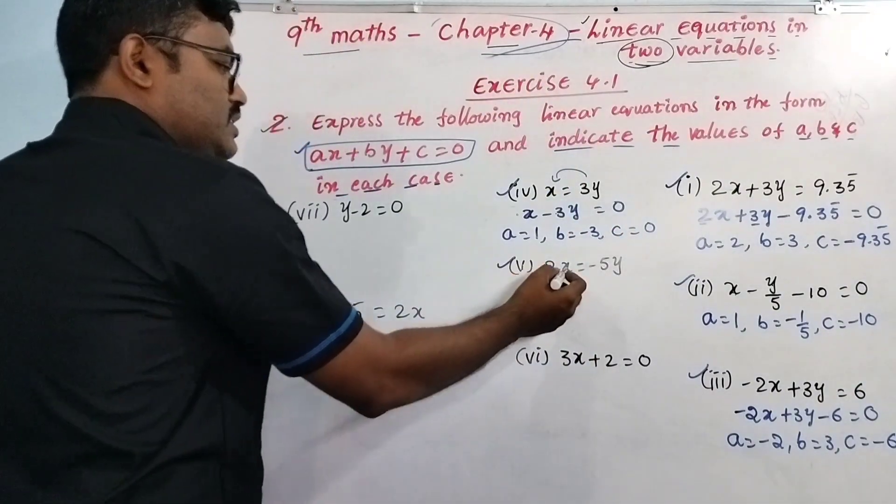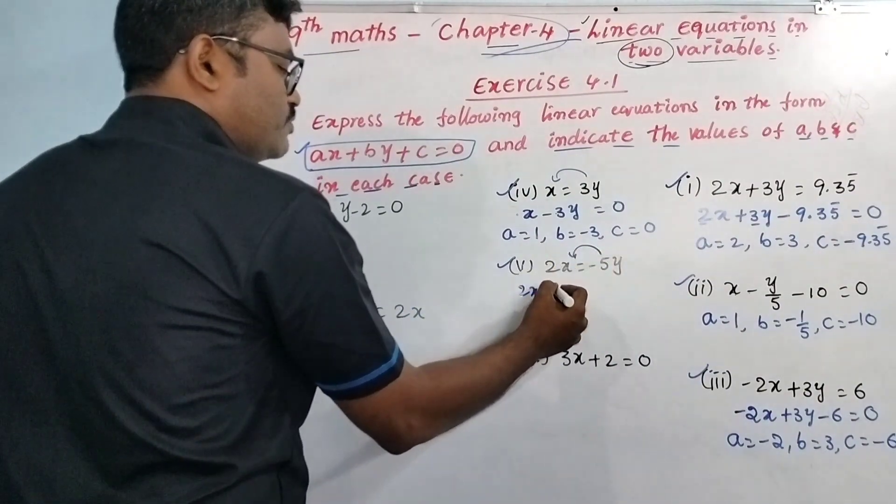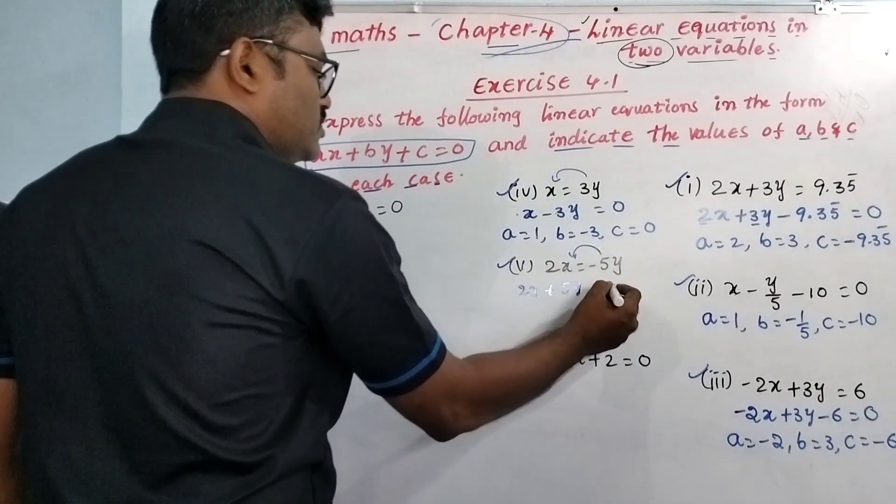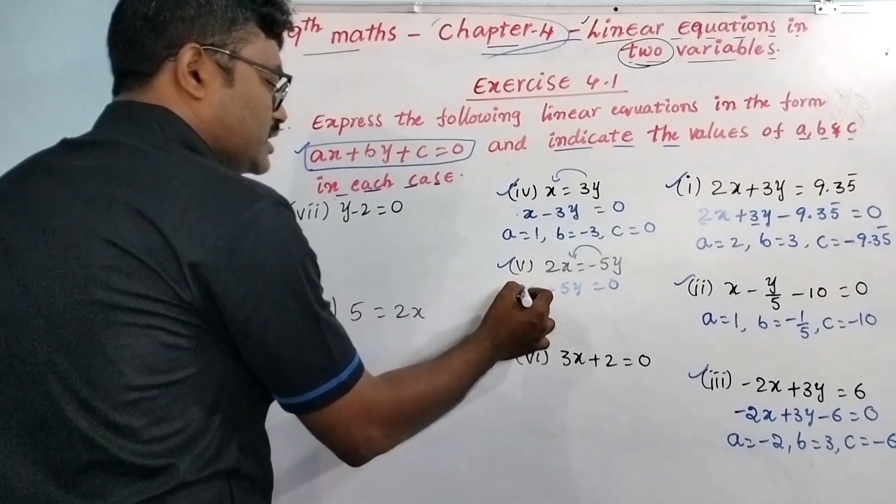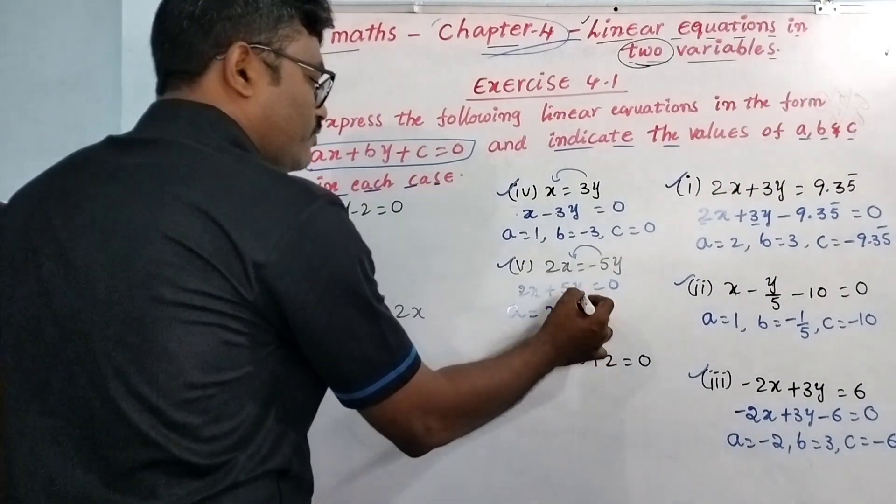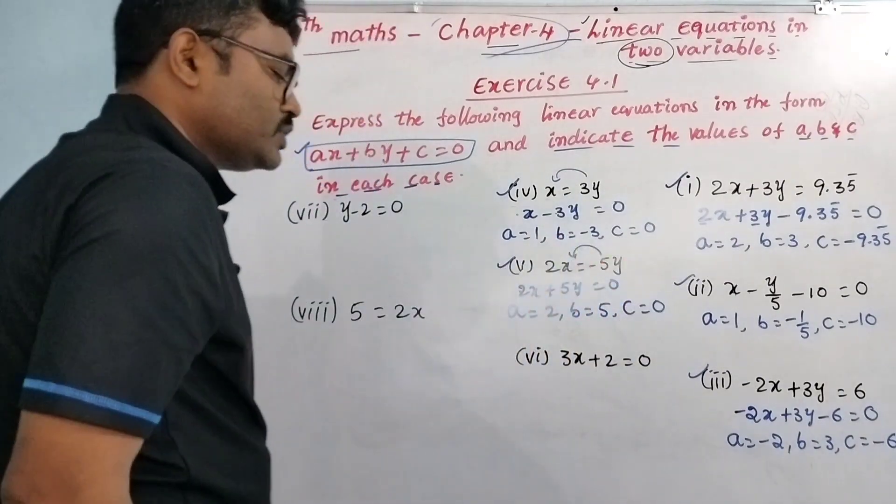Fifth one: 2x minus 5y. Transpose to get 2x plus 5y equals 0. The values of A, B, C: A is 2, the x coefficient. B, the y coefficient, is 5. And there is no C, which means C is 0.